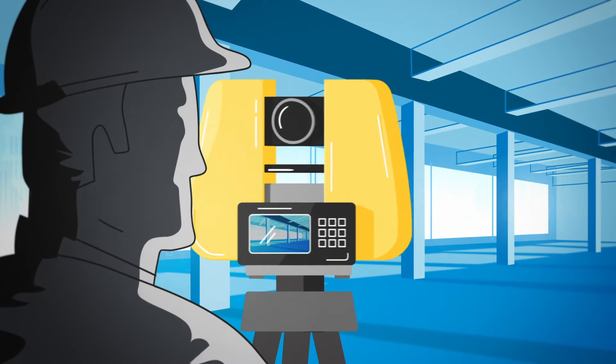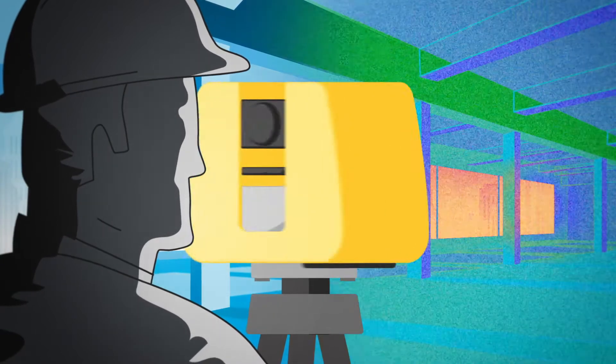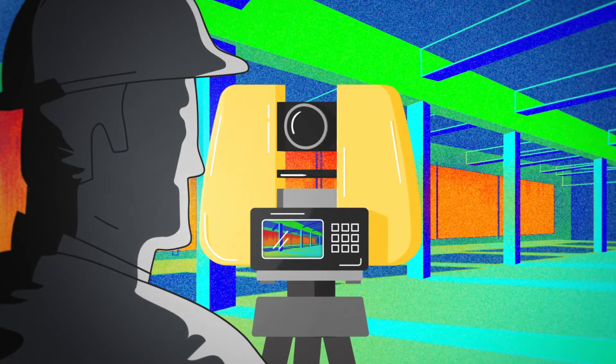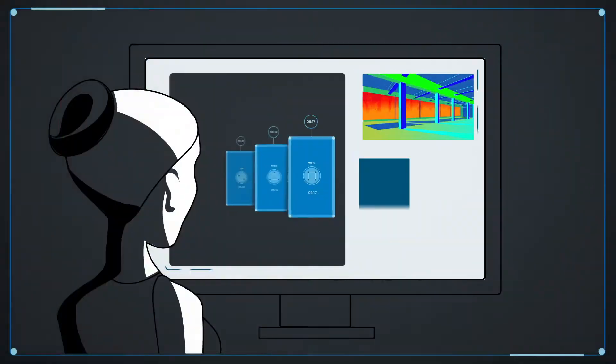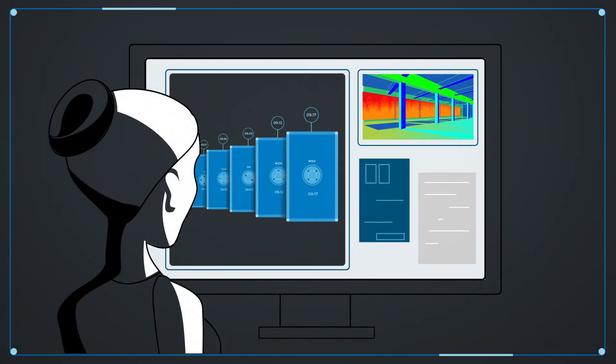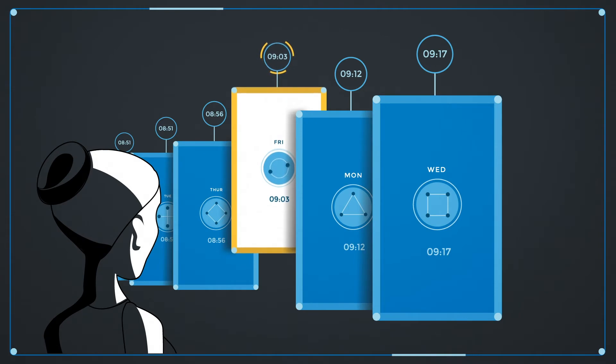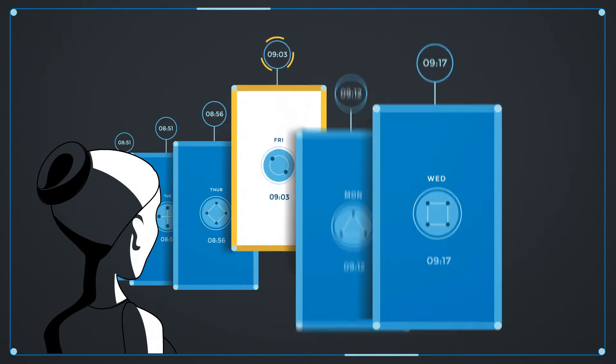Laser scanners are invaluable in these situations because they allow contractors to record progress and compare data to the original model. If a discrepancy arises, the contractor can simply reference historical scans and identify the issue.